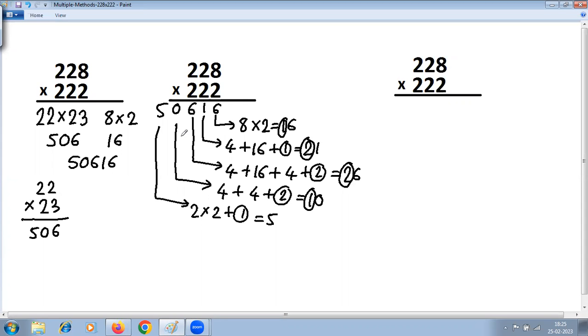The third method: as you can see, 2 is repeating. When the digits are repeating, you can always think of using series of 1, because 222 can be written as 111 into 2. So now there are two problems: 228 into 111, and then whatever answer you get, you have to further multiply back.